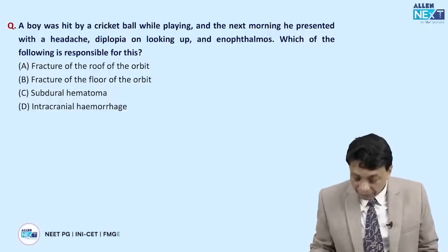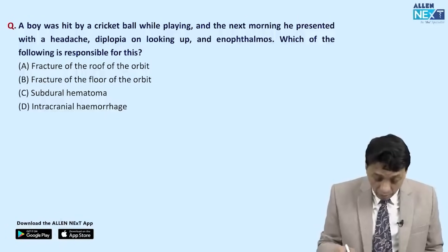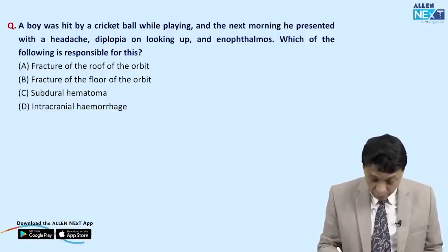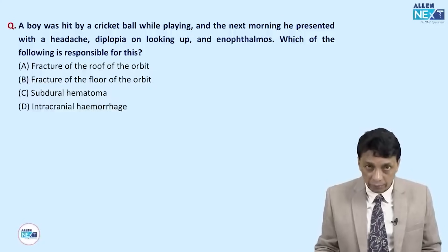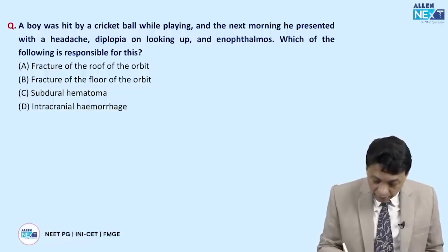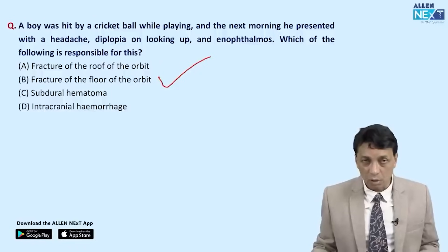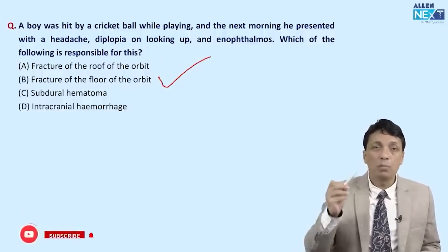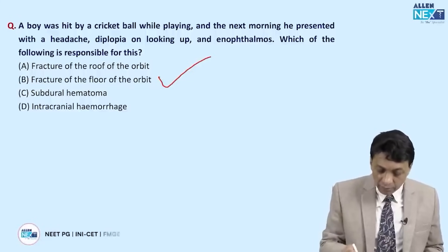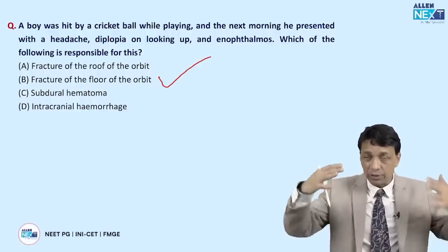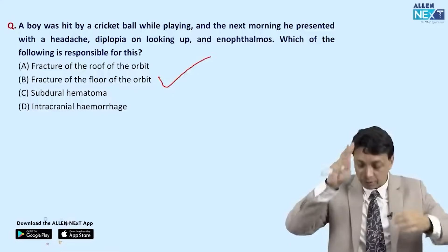A boy hit by a cricket ball presents the next morning with headache, diplopia on looking up, and enophthalmos. The question asks which fracture is responsible: fracture of the roof of the orbit, fracture of the floor of the orbit, subdural hematoma, or intracranial hemorrhage. The answer is fracture of the floor of the orbit — a blowout fracture, the most commonly fractured wall of the orbit — evidenced by diplopia on looking up.